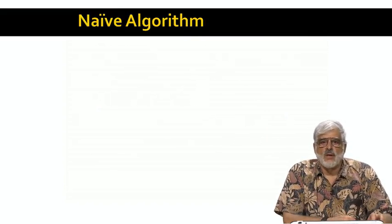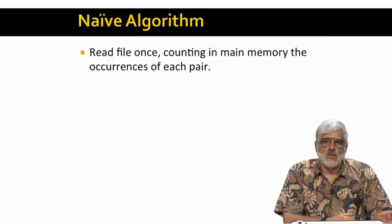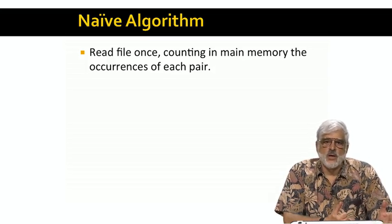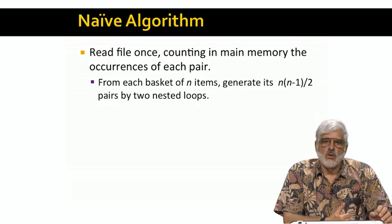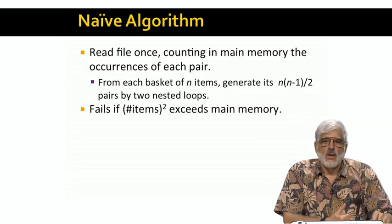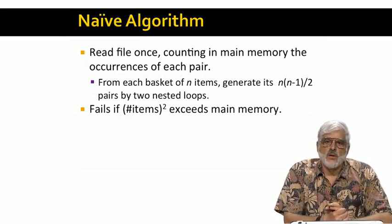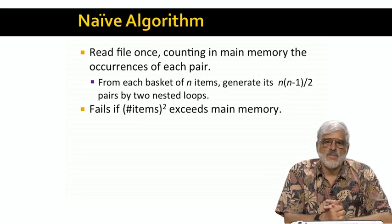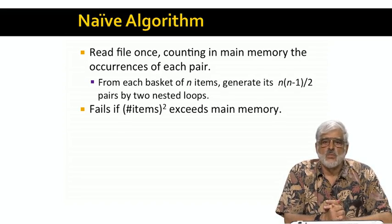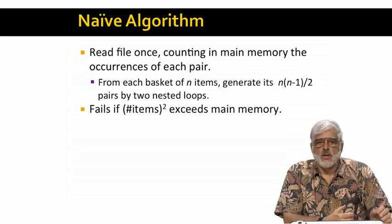Let's start by talking about what we might call the naive algorithm. We want to read the baskets in some number of passes, so why not use just one pass and count all the pairs in main memory? We mentioned this briefly, but just to make sure we understand what happens when we process a basket, we use a double loop to generate all the pairs of items in the basket, and for each pair we add one to its count. This algorithm actually works, provided there is enough space in main memory to count all the pairs of items. The number of bytes we need is roughly the square of the number of items in our data. That is, the number of pairs of items is the number of items choose two, or approximately half the square of the number of items. And if we can count each pair in two bytes, which is possible if the threshold is no more than 2 to the 16th, then the number of bytes we need is exactly the square of the number of items.